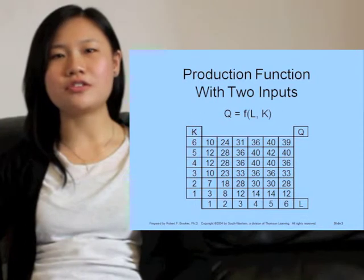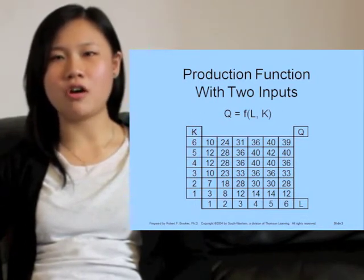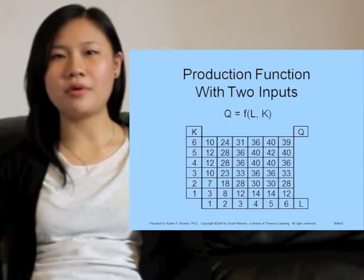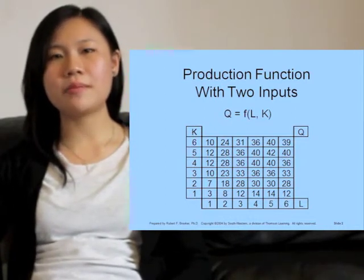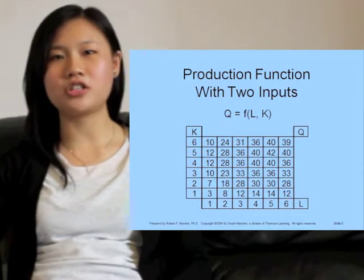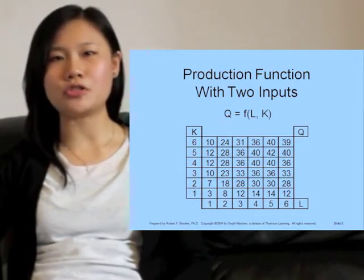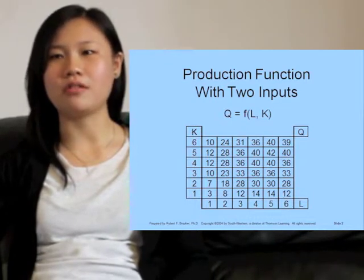This equation reads: the quantity of output is a function of, or depends on, the quantity of labor and capital used in production. The table gives a hypothetical production function, which shows the output that the firm can produce with various combinations of labor and capital.